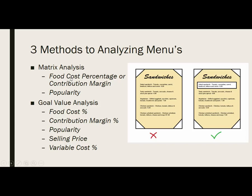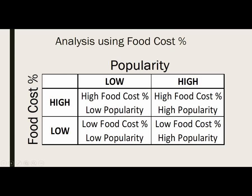There is also a goal value analysis, which goes into much more detail — accounting for food cost percentage, contribution margin, popularity, selling price, and variable cost percentage including labor. I suggest you go to your literature to review it; we do not cover it in this class because it goes into great detail, but it's a good skill to have. Let's concentrate on the matrix analysis instead.